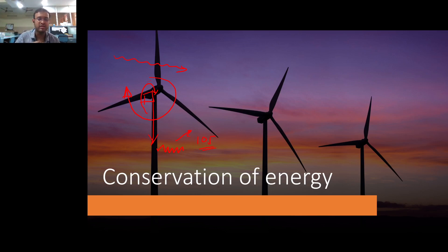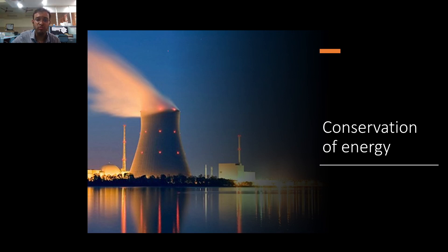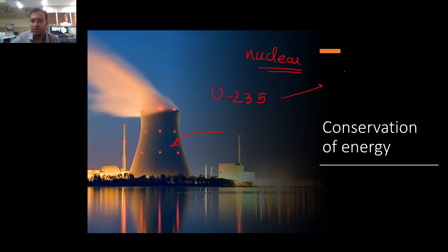Just the form may vary, the type of energy may vary. The same thing applies in nuclear power. What you're putting into the system is nuclear energy — uranium-235. Once it splits up, you have the conversion of nuclear energy to heat energy. You have your fission products and a lot of energy released.